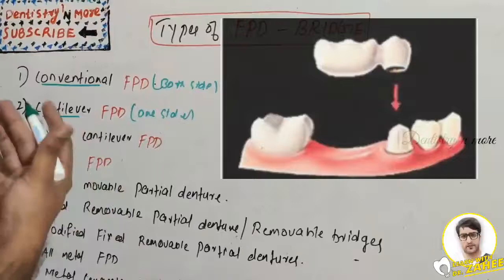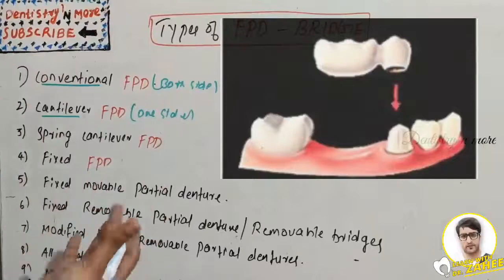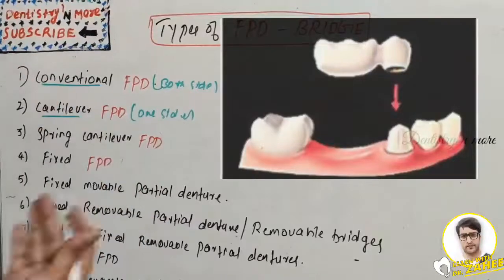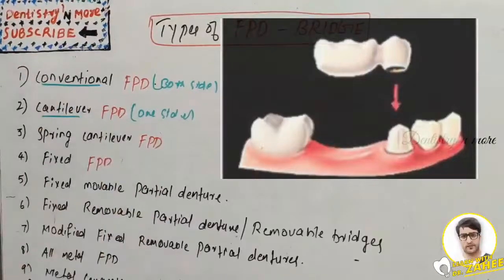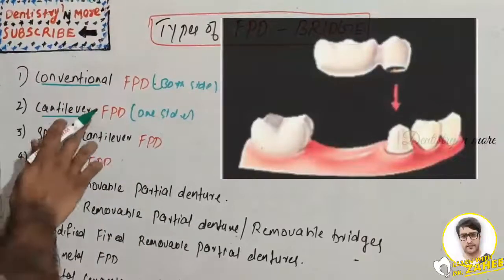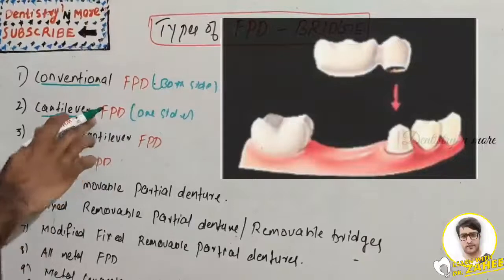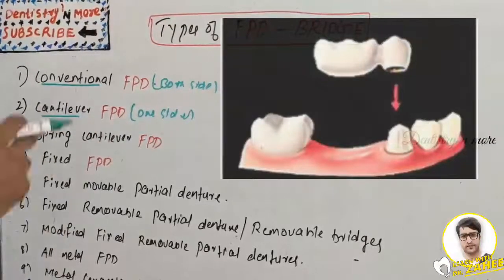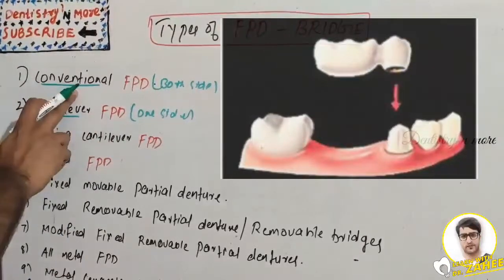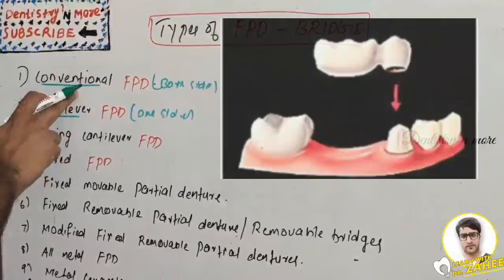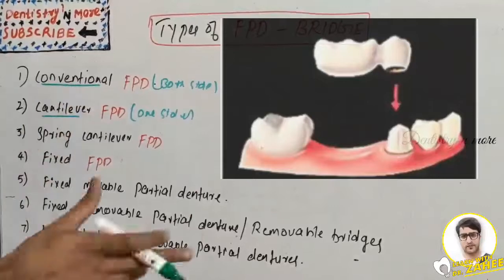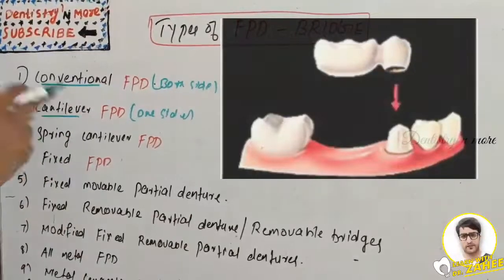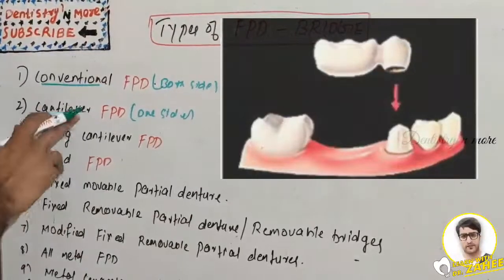The abutment teeth on the supporting side should be strong enough to withstand the additional torsional forces. Support can be obtained from more than one tooth on the same side of the edentulous space. Cantilever FPDs have the advantage of sacrificing just one tooth, unlike the conventional where two teeth are sacrificed, but it has many disadvantages.